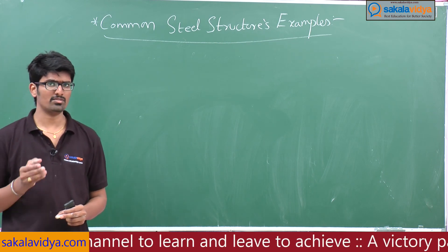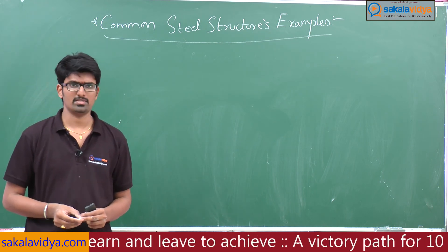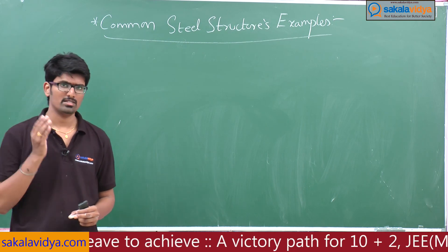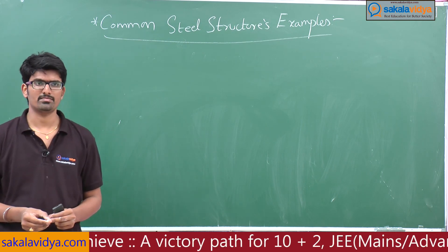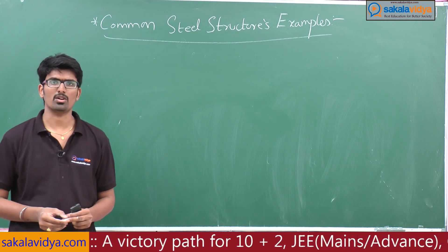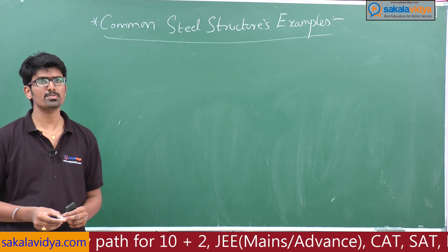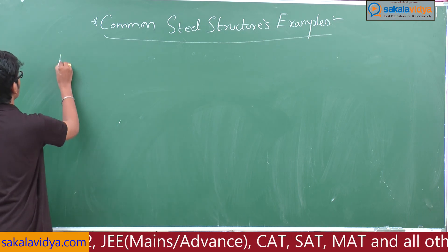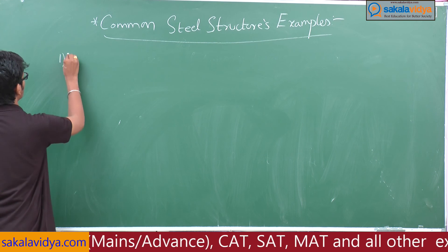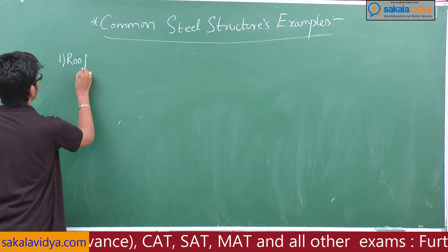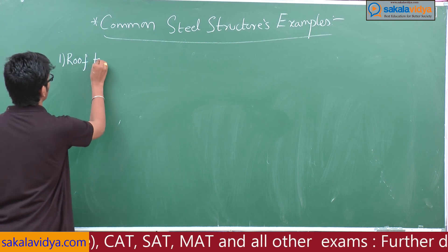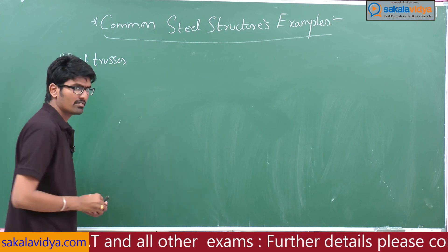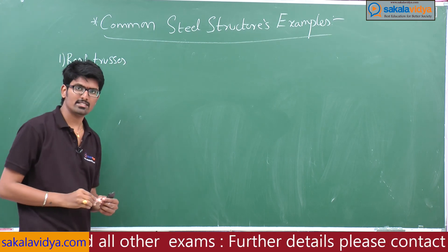The first example is roof truss members — compression members, tension members, columns, column bases, etc. The first point is roof trusses, used in factories and industries.